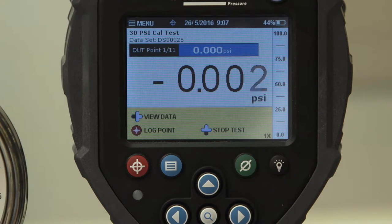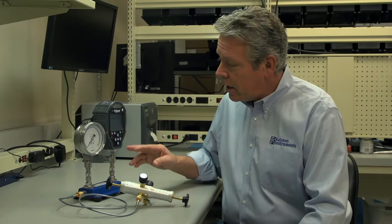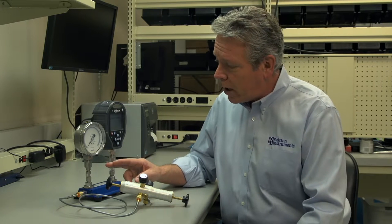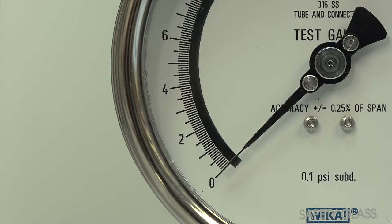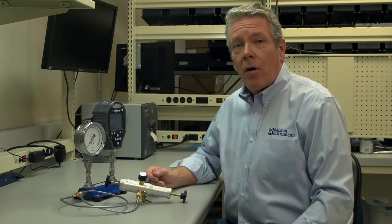I'm prompted on screen for the first test point, in this case zero psi. As we can see our first test point is zero and with no pressure applied our needle is right on the zero hash mark. Since no pressure has been applied yet the Field Lab also reads zero.